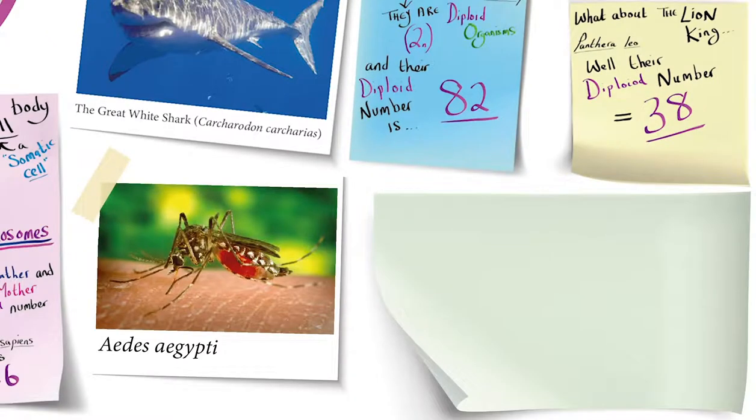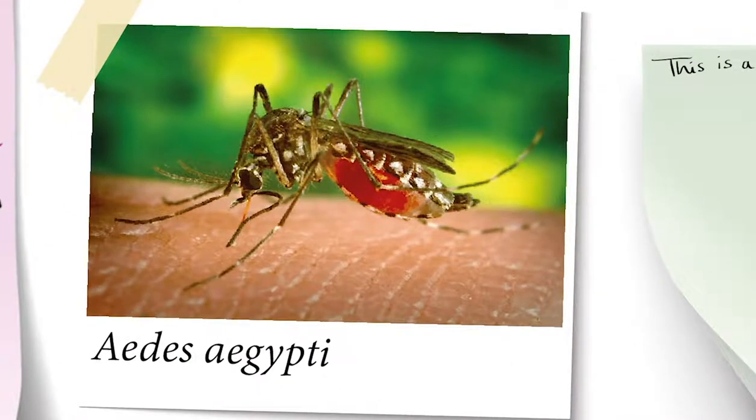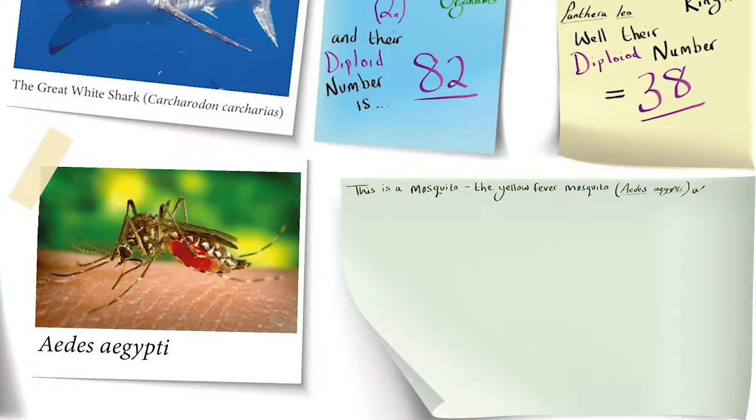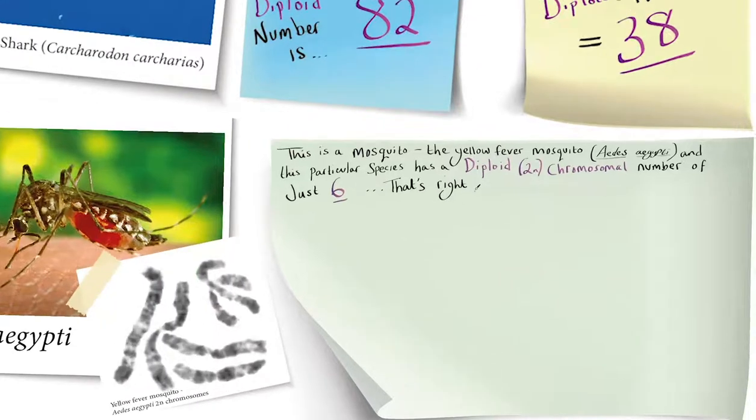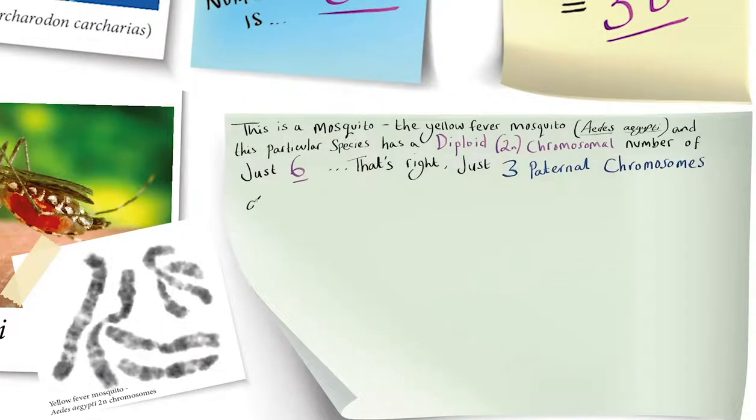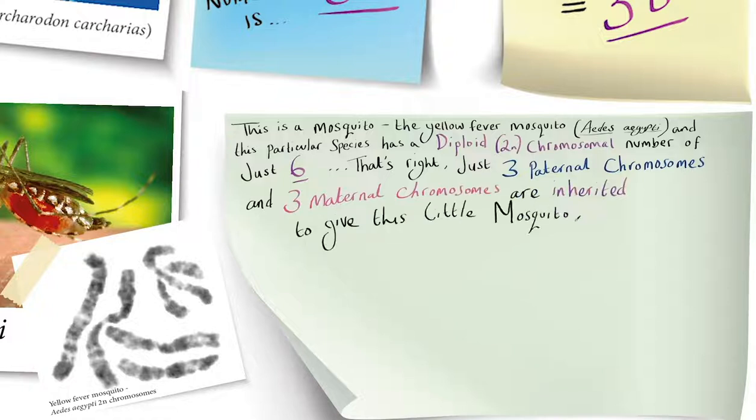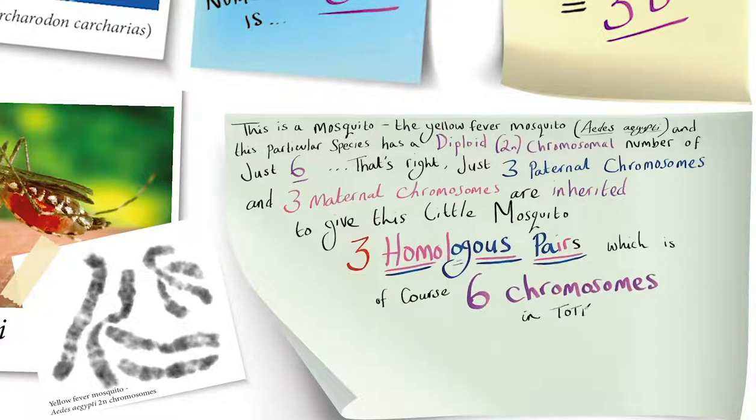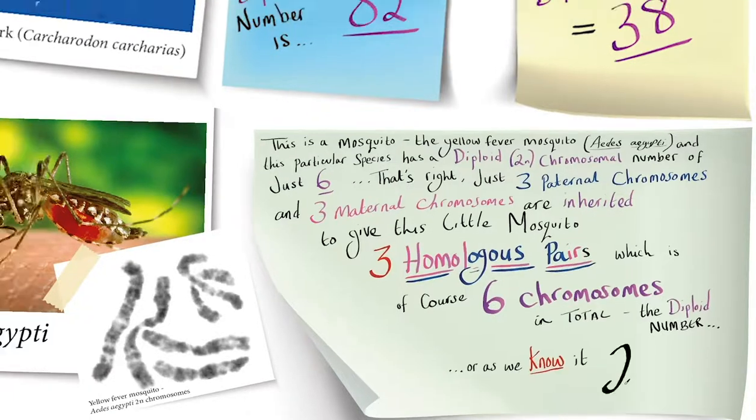And here's one final example. This is a mosquito, the yellow fever mosquito, Aedes aegypti. And this particular species has a diploid 2n chromosomal number of just six. That's right, just three paternal chromosomes and three maternal chromosomes are inherited to give this little mosquito three homologous pairs, which is of course six chromosomes in total, the diploid number or as we know it, 2n.